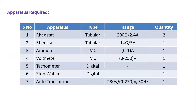Coming to the apparatus required: we need two rheostats of 290 ohm / 2.4 amps. One is the motor field rheostat used to adjust the speed, and the other is the generator field rheostat used to adjust the excitation — one connected in the motor field circuit and one in the generator field circuit.